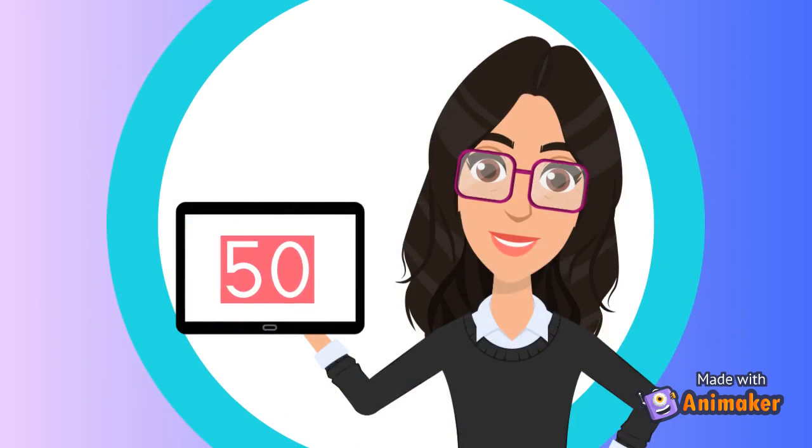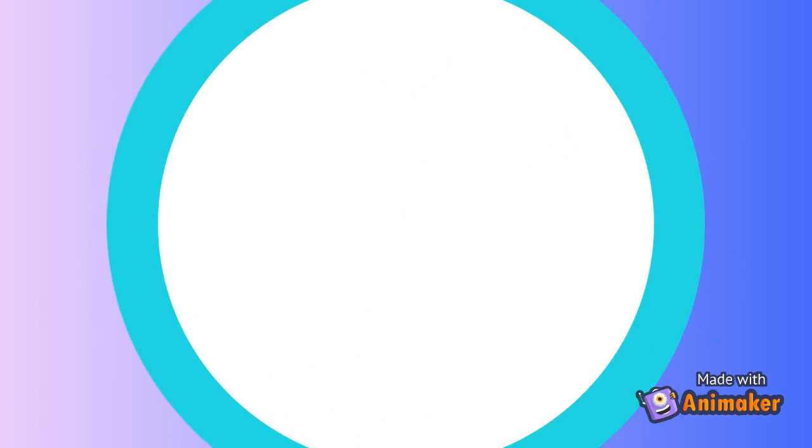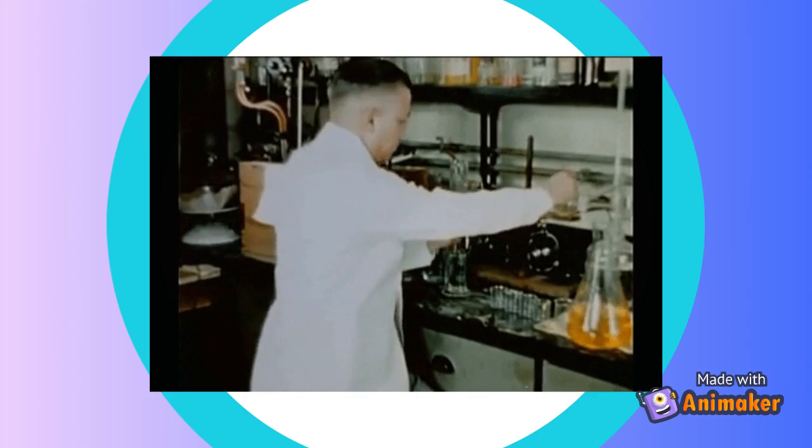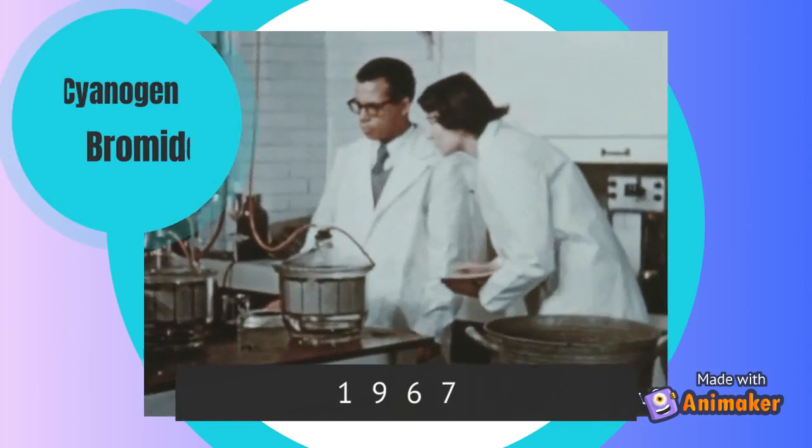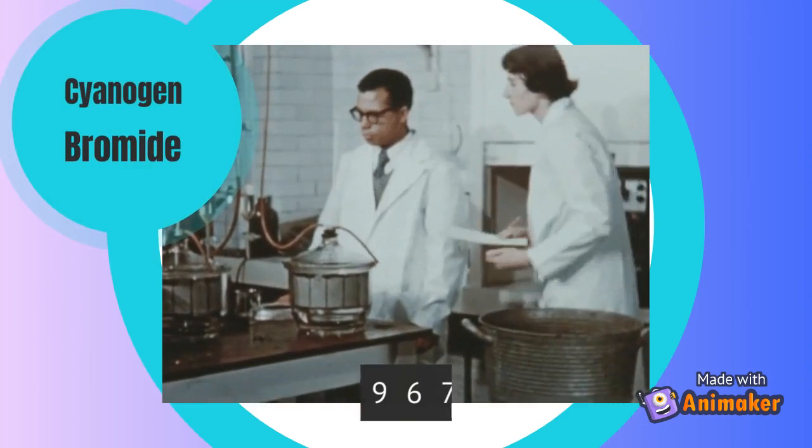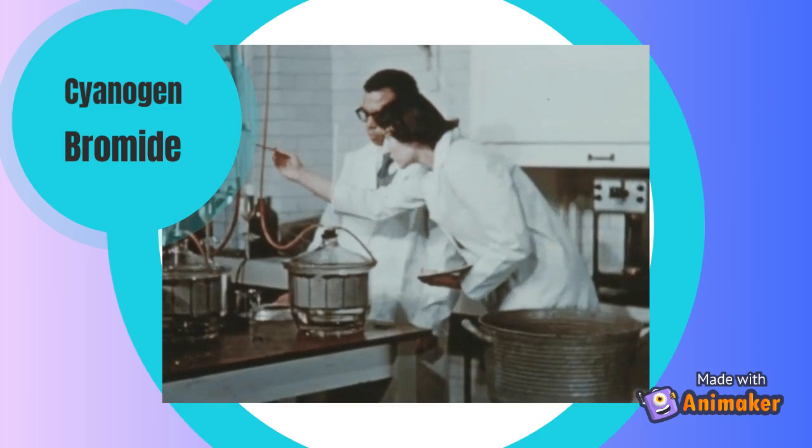However, this method continued to slowly develop over the next 50 years. An important advancement in this later area was a report in 1967, which the cyanogen bromide method for protein and peptide immobilization was first reported.